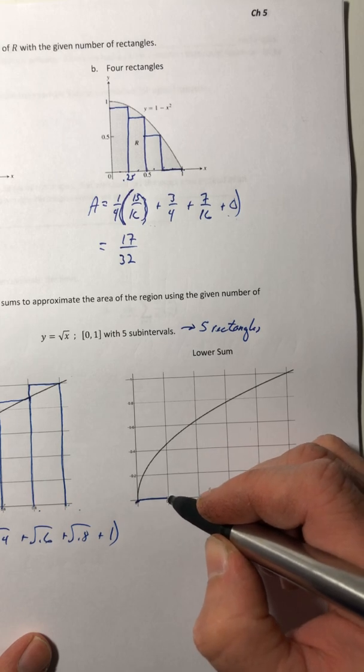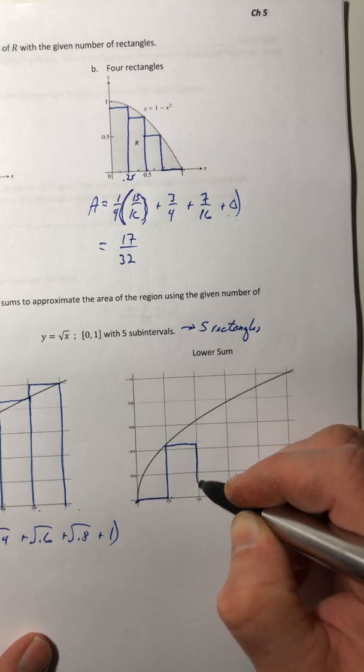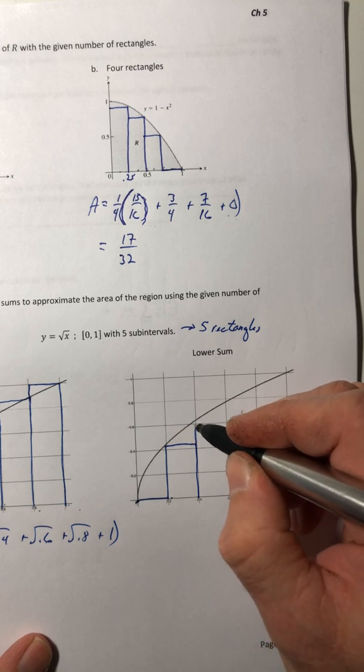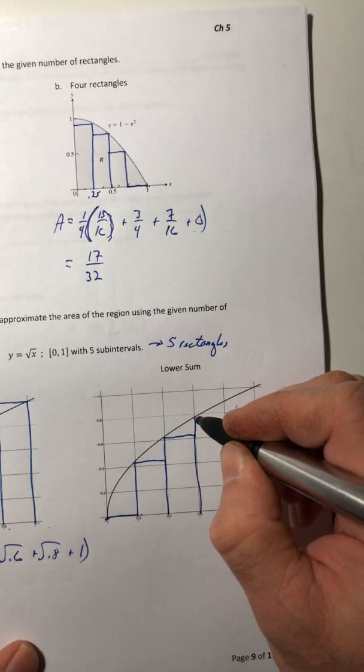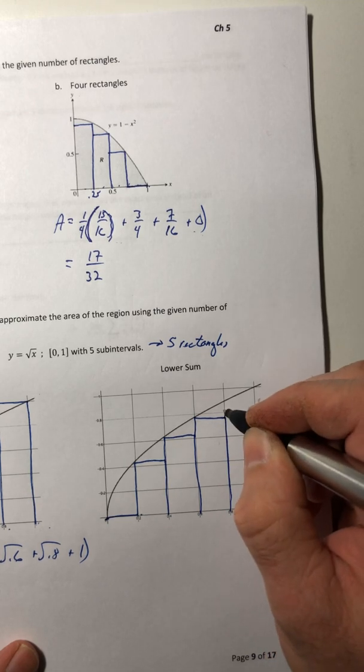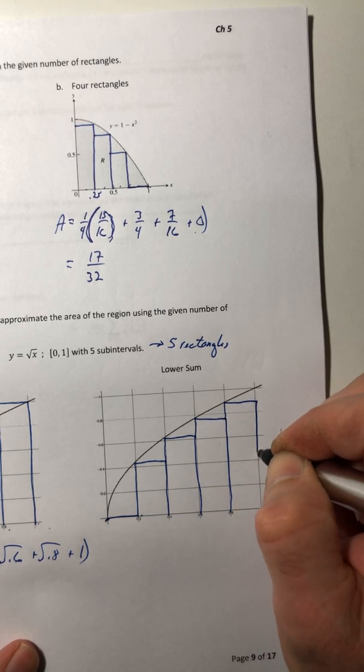Rectangle number two, it's going to go like that. Rectangle number three, four, and five.